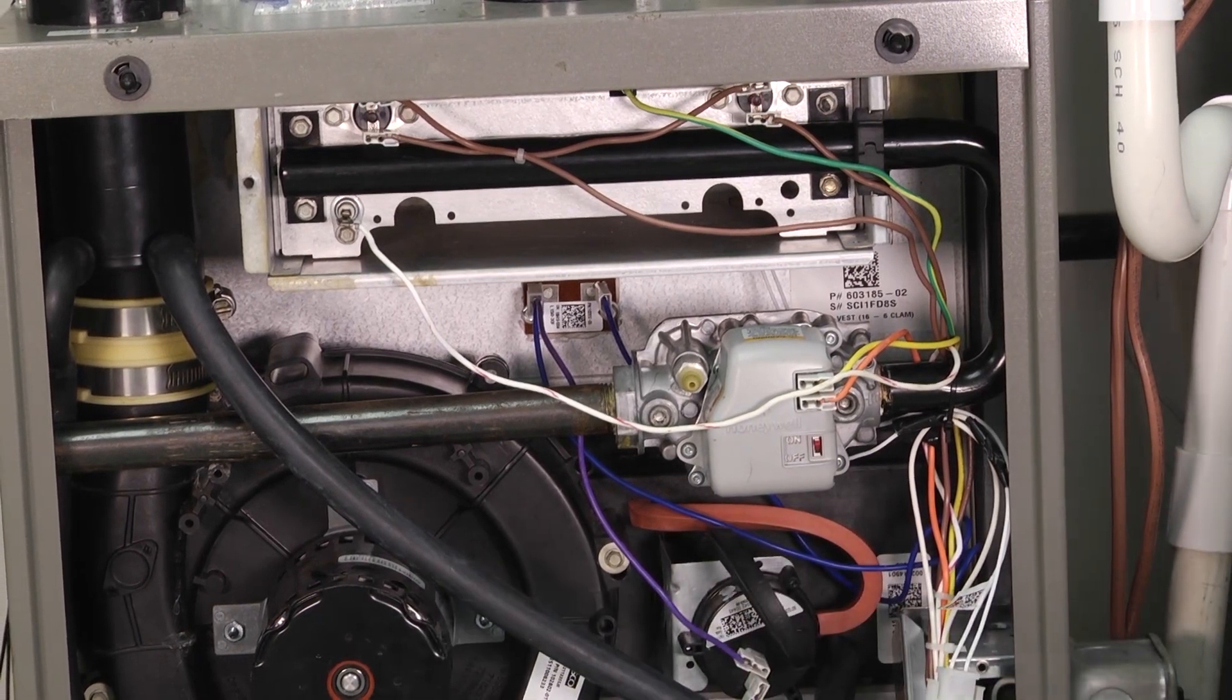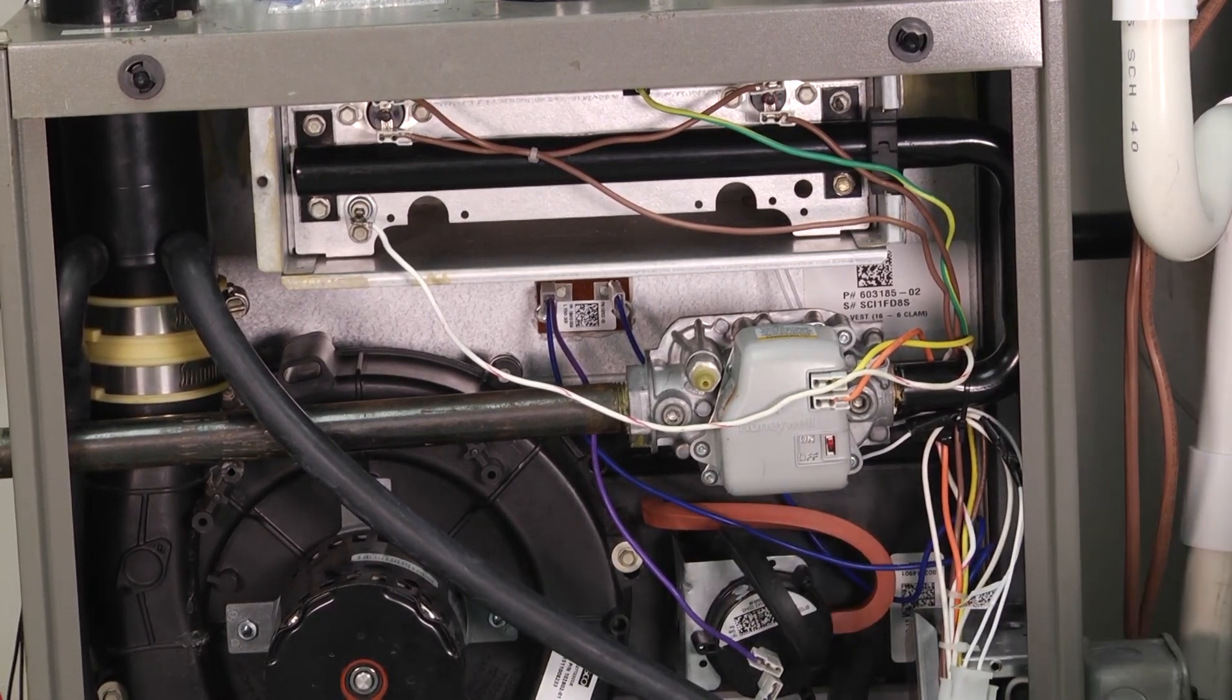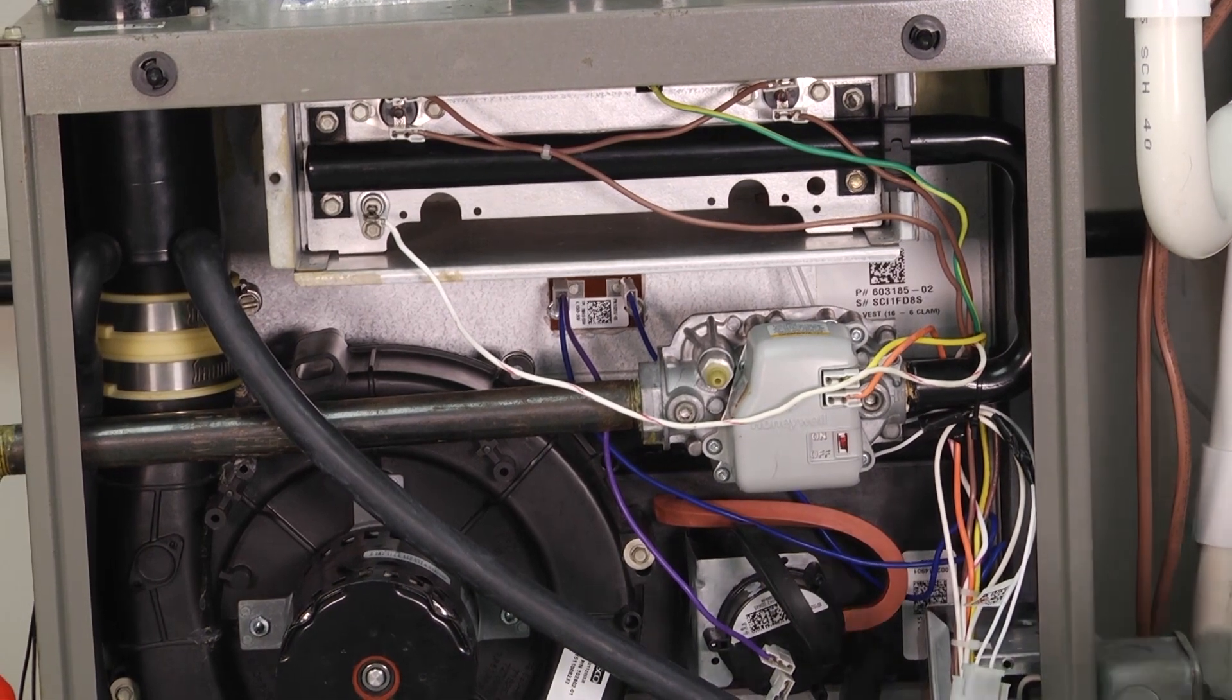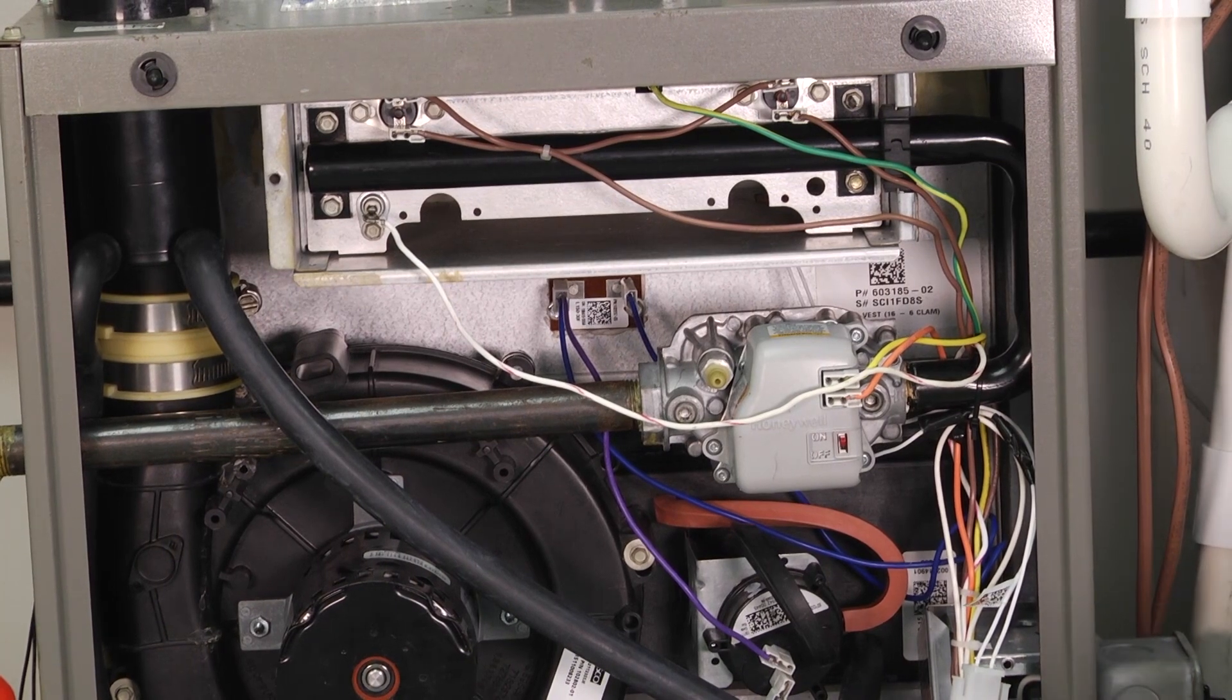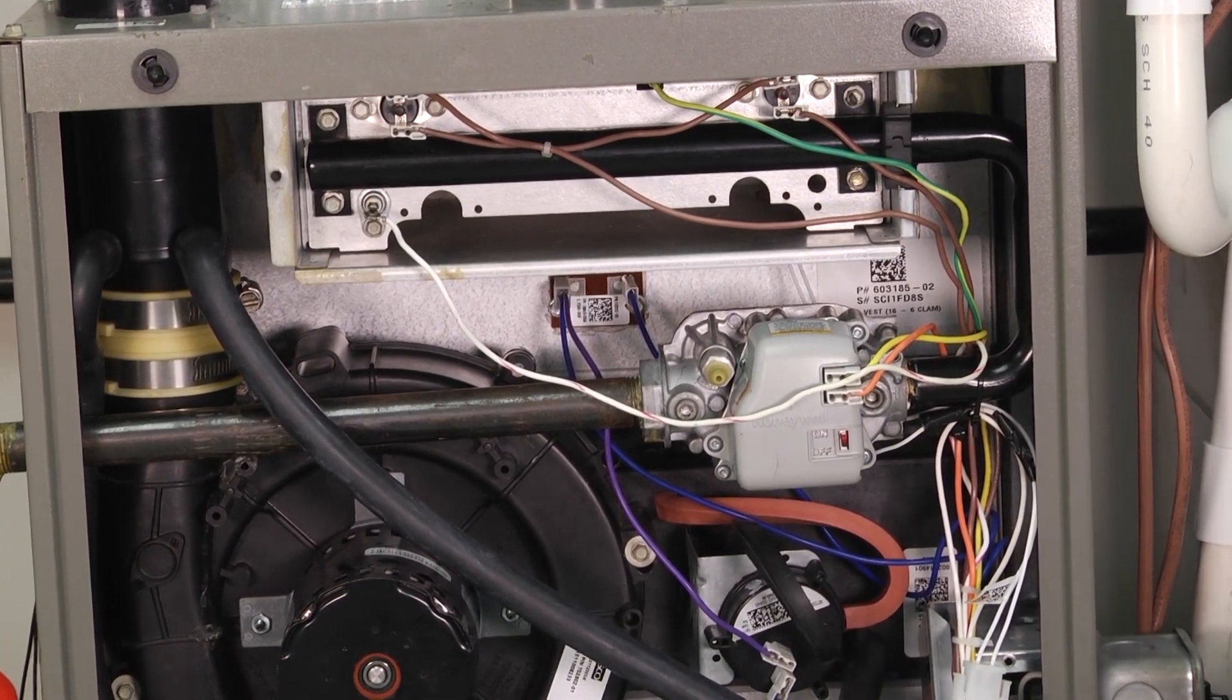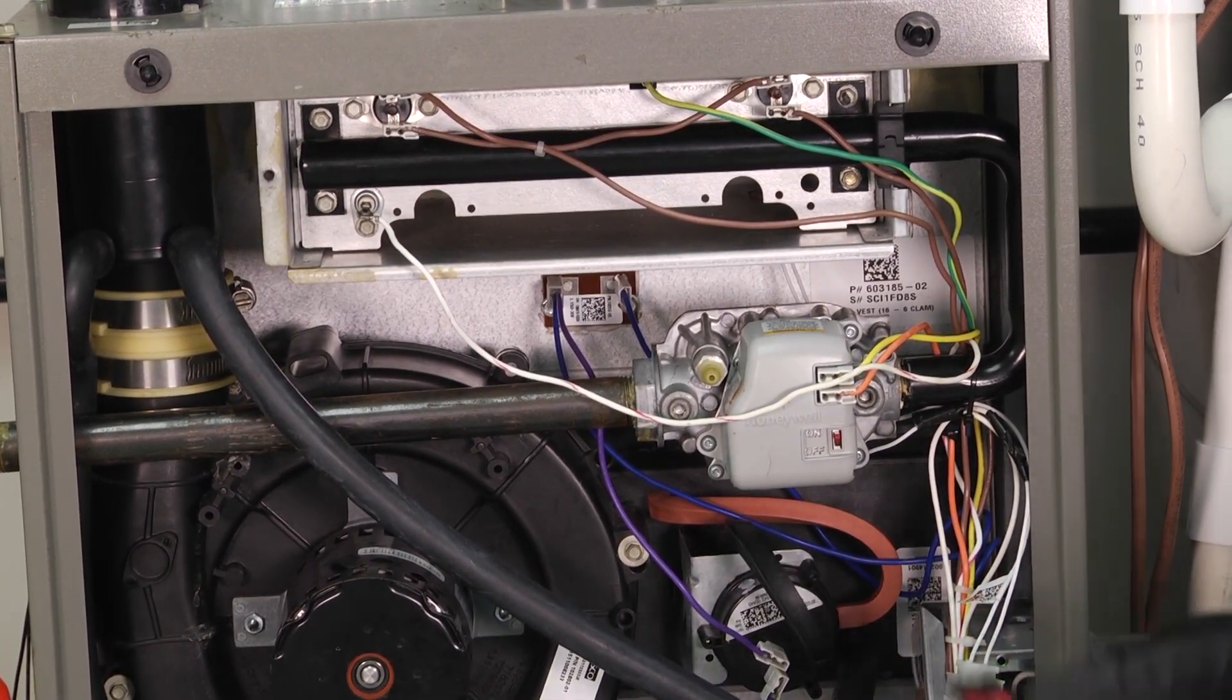Once you do that, you take that information and if it's in the good range, then you tell the homeowner that, hey, your igniter tested at 47 ohms and according to the manufacturer, that's good. No need to worry there.